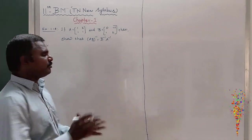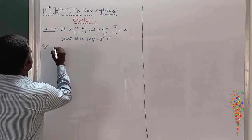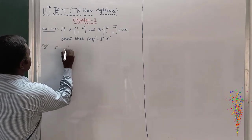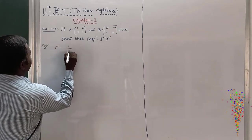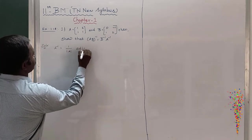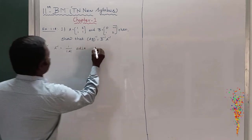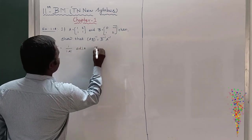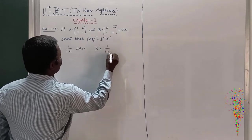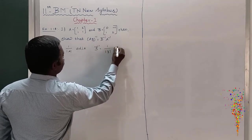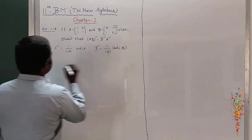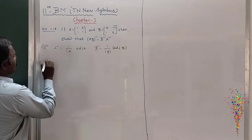So firstly we identify what A inverse and B inverse are. A inverse equals 1 by modulus of A into adjoint of A, and B inverse equals 1 by modulus of B into adjoint of B.